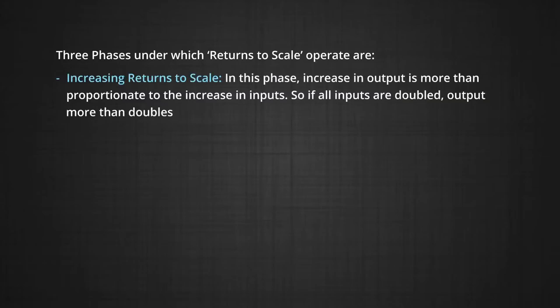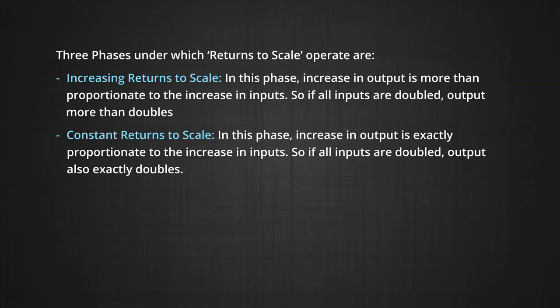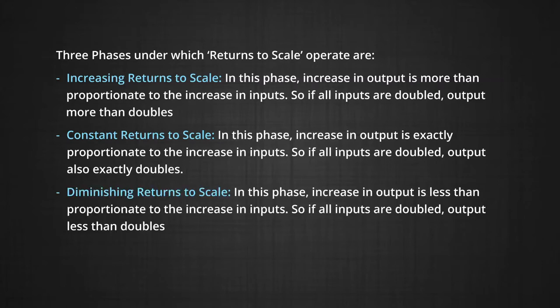Three types of returns to scale operate and these are: first, increasing returns to scale. In this case, the increase in output is more than proportionate to the increase in inputs. So for example, if all inputs are doubled, under increasing returns to scale, output more than doubles. Constant returns to scale are said to exist when an increase in output is exactly proportionate to the increase in inputs. In this case, if all inputs are doubled, output also exactly doubles. Diminishing returns to scale is the case when increase in output is actually less proportionate to the increase in inputs. If all inputs are doubled, output also increases, but it less than doubles.